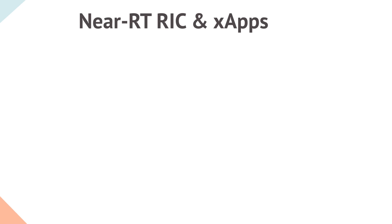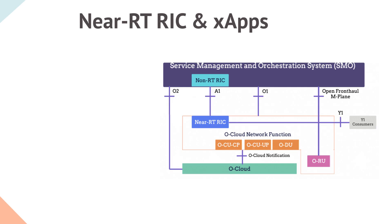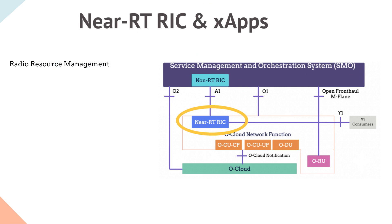The Near-RT-RIC, or Near Real-Time RAN Intelligent Controller, is responsible for radio resource management. It controls RAN elements and their resources with optimization actions that typically take 10 milliseconds to 1 second to complete. Near-RT-RIC control is steered by policies and assisted by models computed and trained by the Non-RT-RIC, receiving policy guidance via the A1 interface.